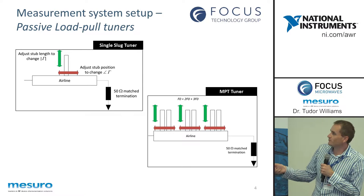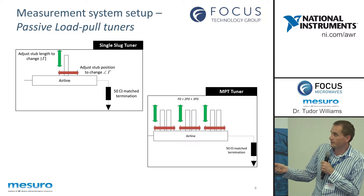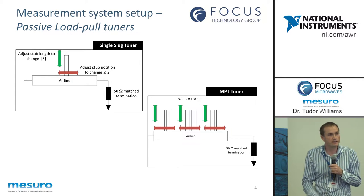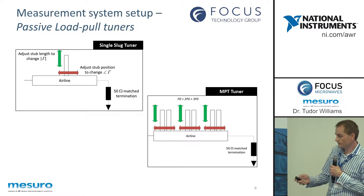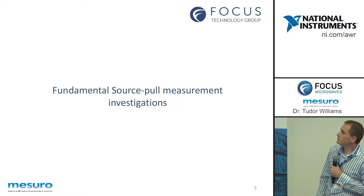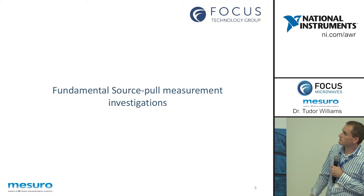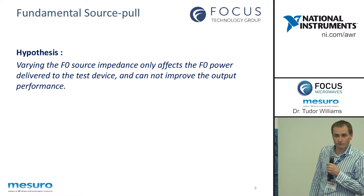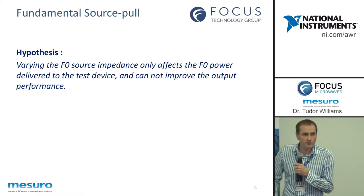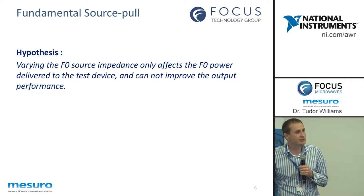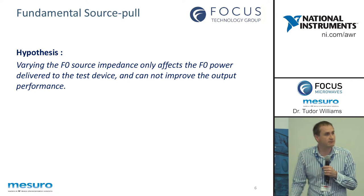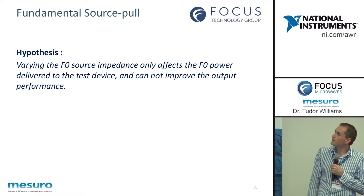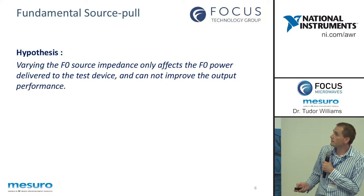That's the single stub tuner, and that's what we're using here. So we actually have control now, independently of three harmonics — we've got a single tuner. So that's what we're trying to show works or not. So when we vary the fundamental source impedance, what actually happens? Do we just end up changing the transistor gain, or do we actually change the performance of the device?